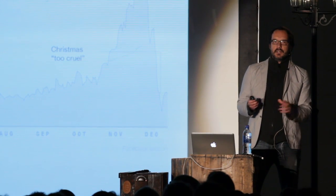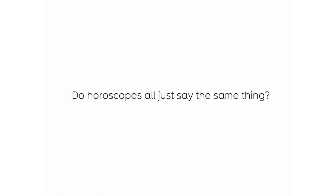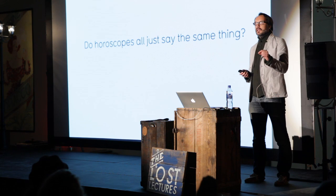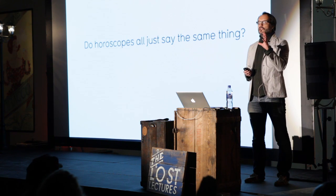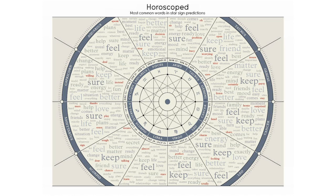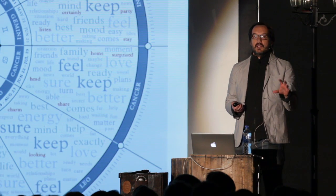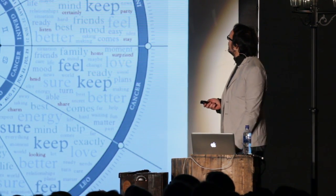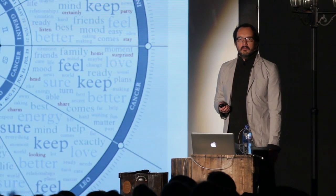I had this question: do horoscopes all just say the same thing? That's my suspicion, but I'm not sure — so let's get some evidence. I scraped 60,000 horoscopes, did a word frequency analysis, and created a chart using the most common words from all the star signs. You can decide for yourself — do they just say the same thing? The red words are unique to each star sign.